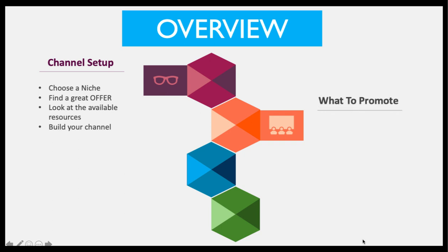The second thing to do is obviously we want to find out what to promote. We'll select the type of marketing and I'm going to show you some examples of things that we can promote. There are various types of marketing you can do on YouTube, some of them more difficult than others. We're going to find a product or service that we want to start off by promoting. Our channels don't have to be focused on one product or service — we can generally talk about various things and promote products or services within that particular niche. We can go and research promotion examples — go to other people's YouTube channels and figure out what they're doing to promote things in their niche, what type of videos they're creating. Then you can go and get your links.